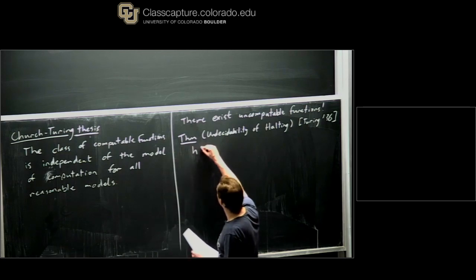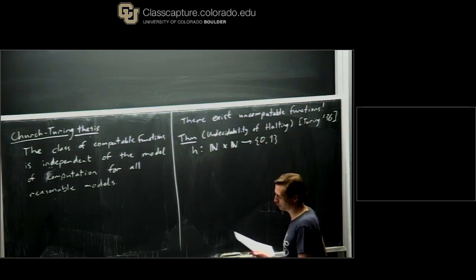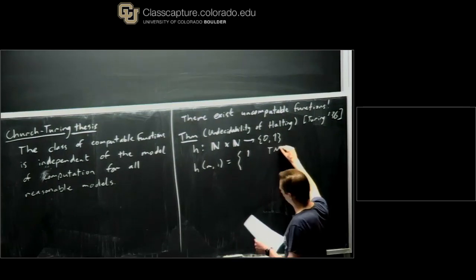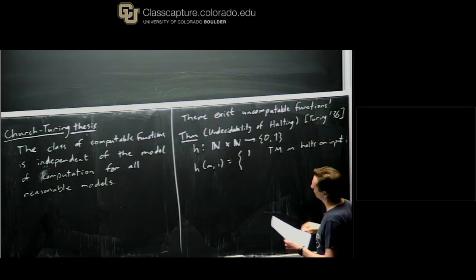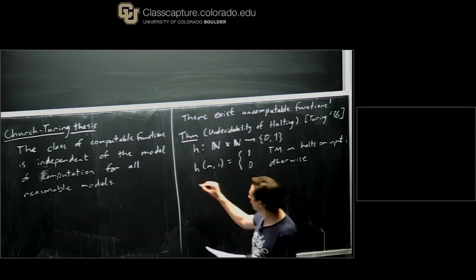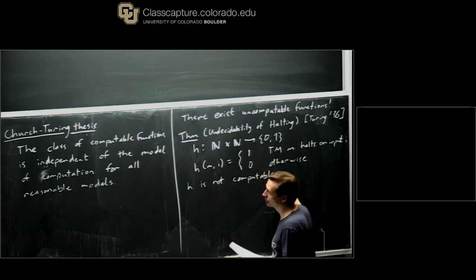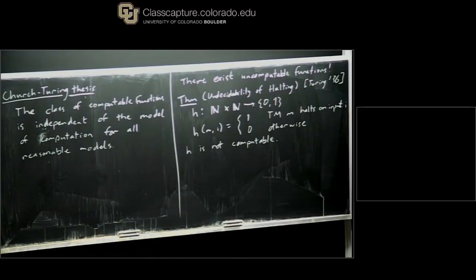The halting problem, from Turing 1936: I define a Boolean function of two natural numbers. It equals one if the m-th Turing machine halts on input i, and zero otherwise. This is one way of phrasing the undecidability of halting. This is a definition of a function on natural numbers, and what Turing proved is that this function is not computable — it's not in the set of computable functions. This is certainly one of the big results of the 20th century, and it's actually very easy to prove.